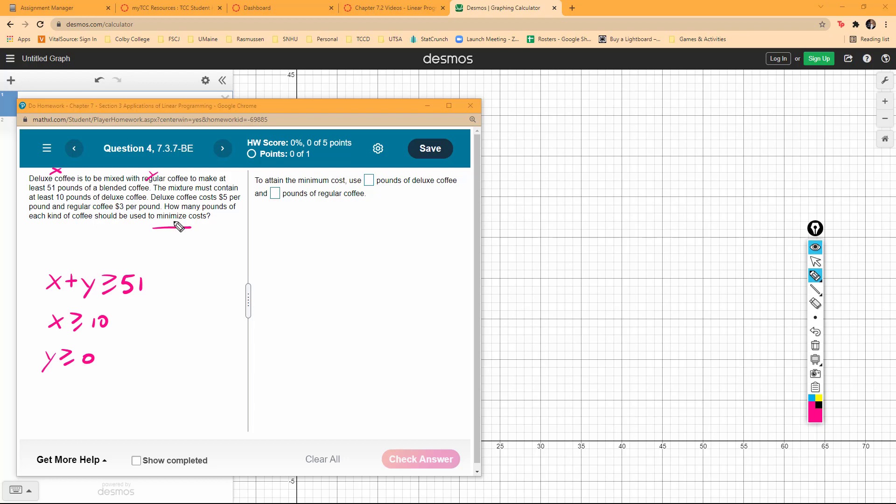What are we trying to minimize here? We're trying to minimize $5 of the deluxe and then $3 of the regular coffee.